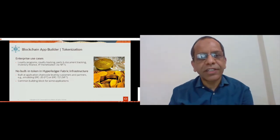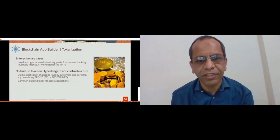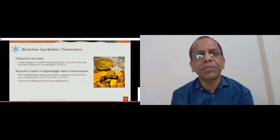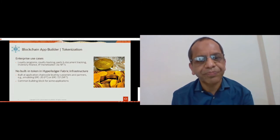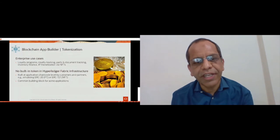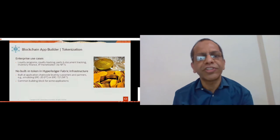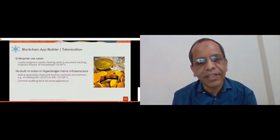One thing that Hyperledger Fabric lacks is native tokenization support, yet a number of applications are coming up on blockchain networks for tokenization — loyalty programs, royalty tracking, parts and document tracking, and so on. Hyperledger Fabric infrastructure itself does not provide any built-in support for tokens. However, a number of applications have been developed that emulate ERC-20 for fungible tokens and ERC-721 for non-fungible tokens, though no common building blocks have been established.